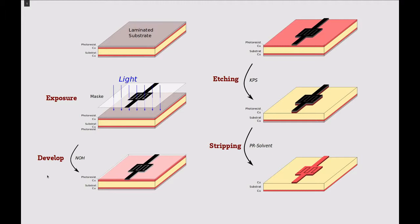The process involves four steps: the exposure, the development, the etching, and the stripping of the circuit.